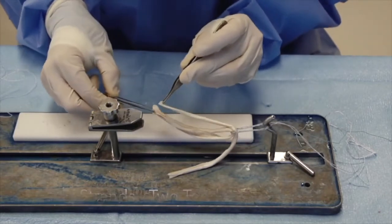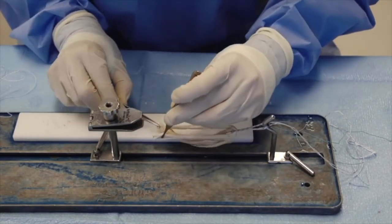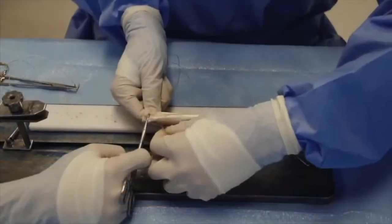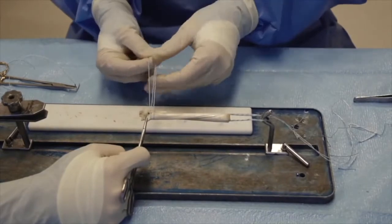We will demonstrate the four strand technique with two tendons. Both tendons are loaded in a suspensory device with a reverse orientation. A non-absorbable suture is passed twice around the four free ends of the graft.